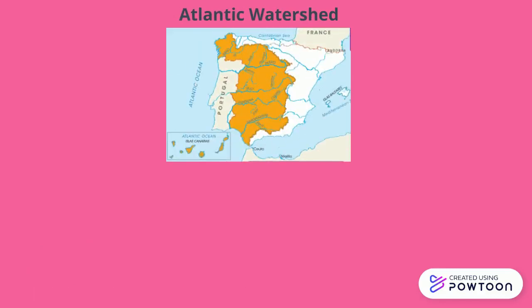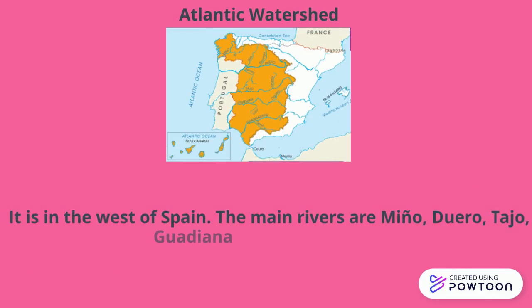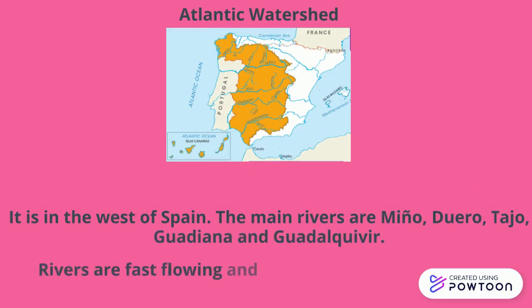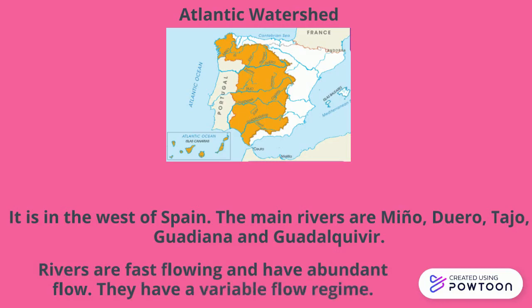And finally, Atlantic watershed. It is in the west of Spain. The main rivers are Miño, Duero, Tajo, Guadiana, and Guadalquivir. Rivers are fast flowing and have abundant flow, and they have a variable flow regime.